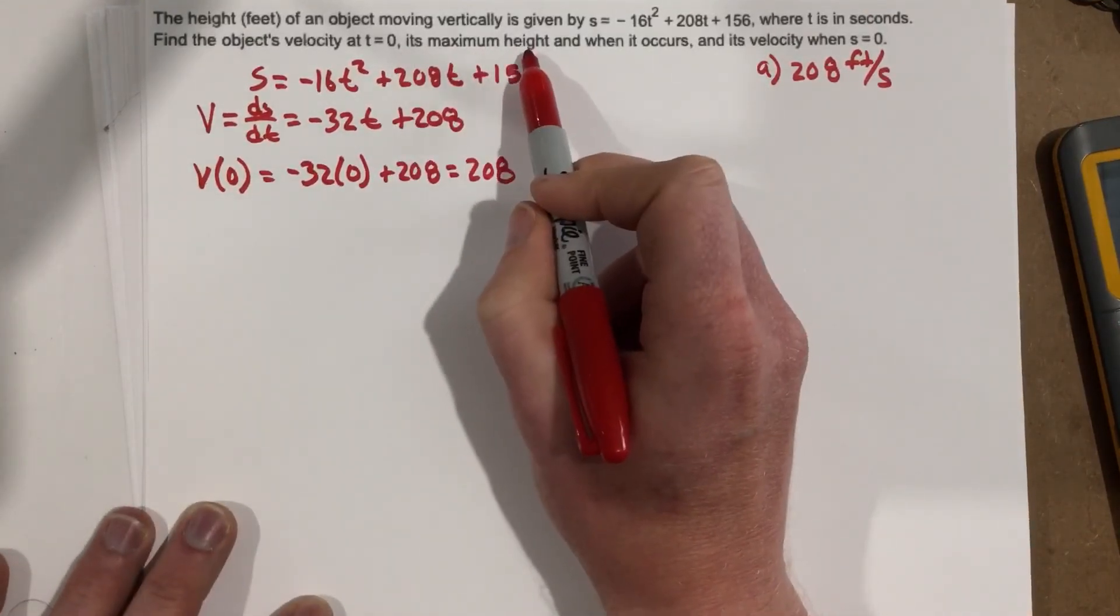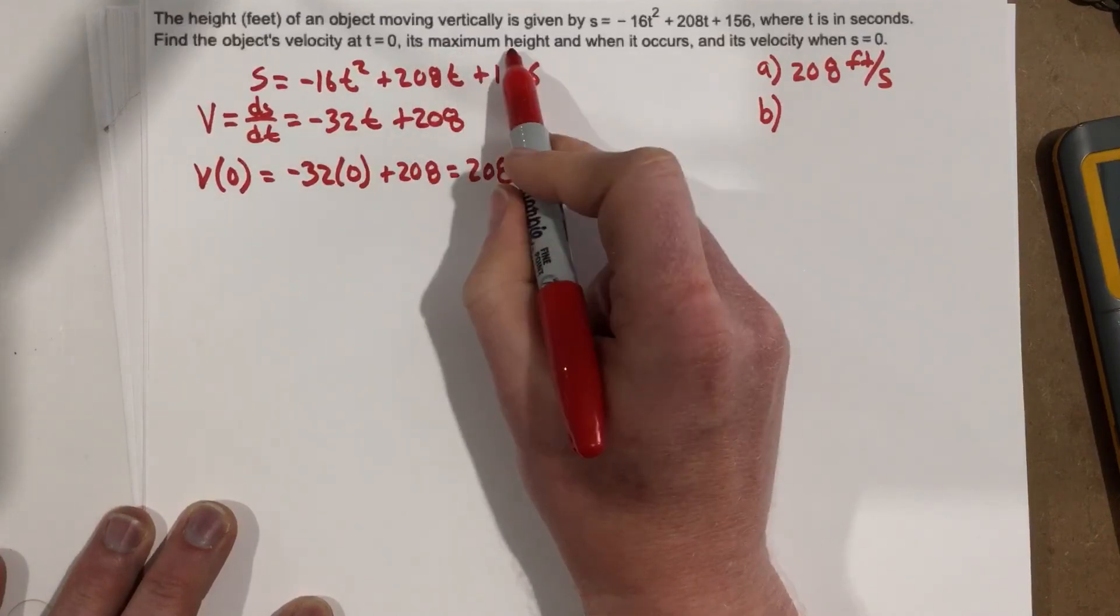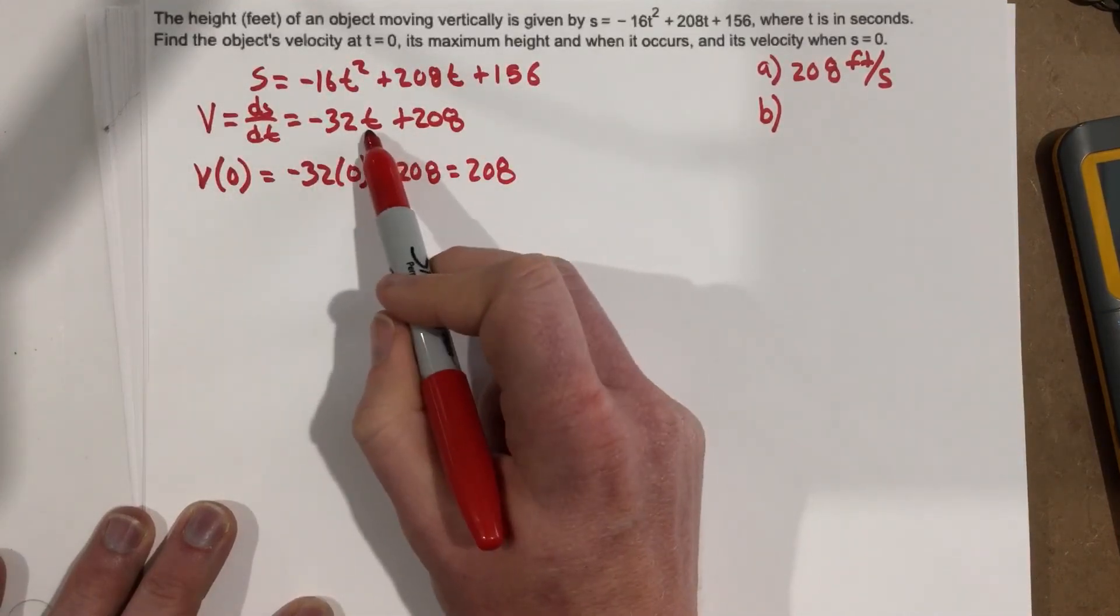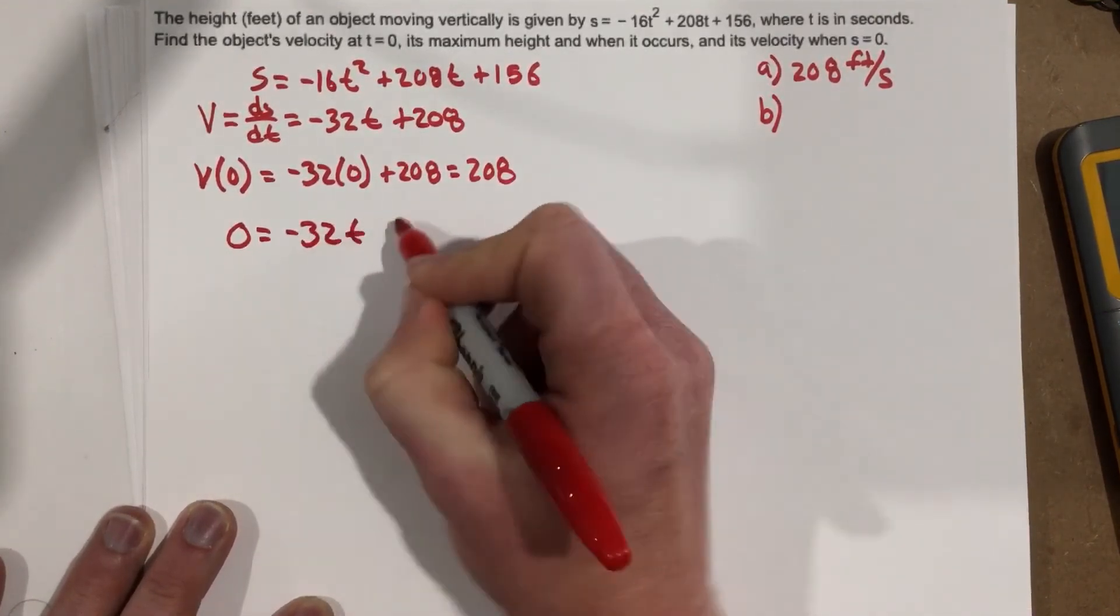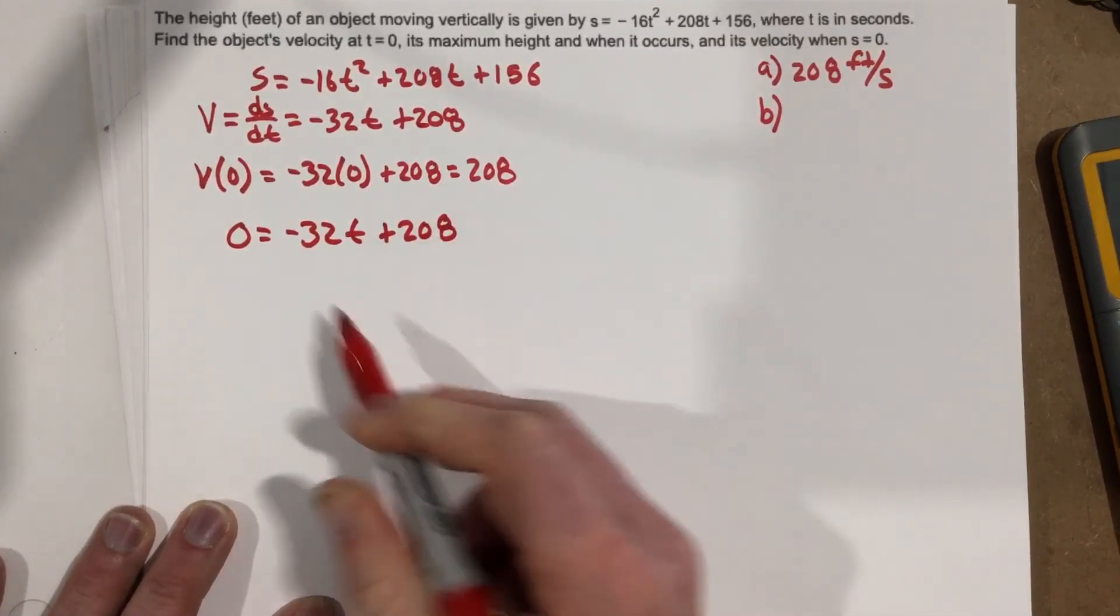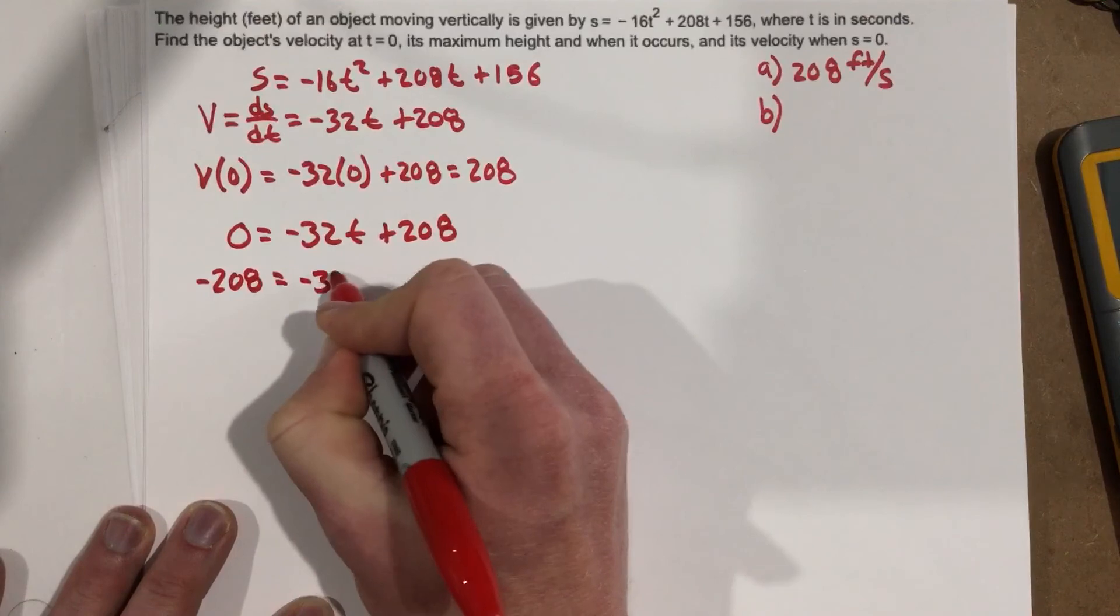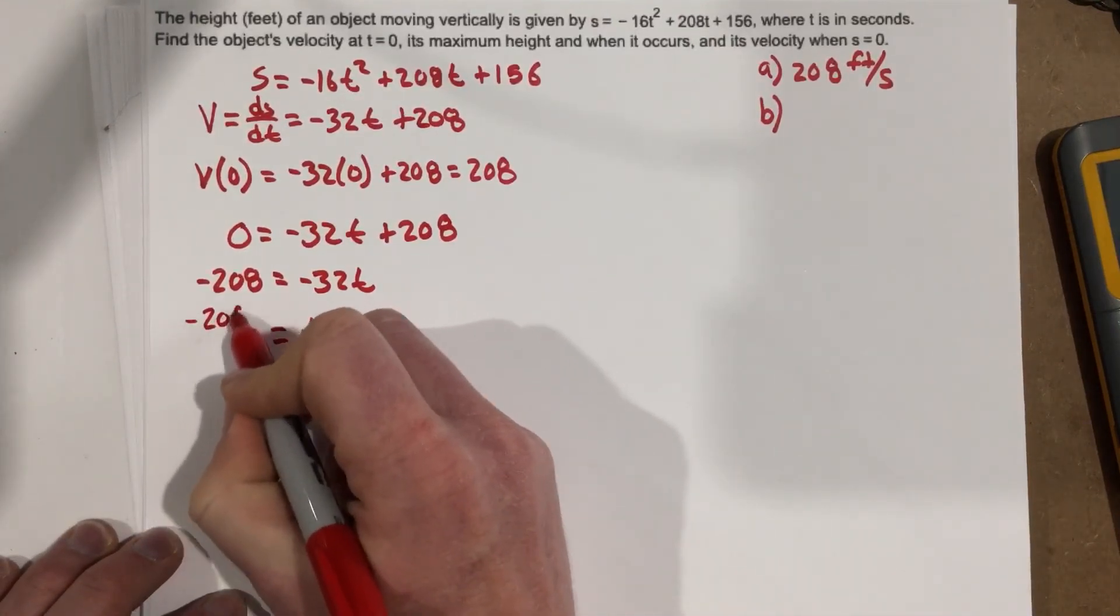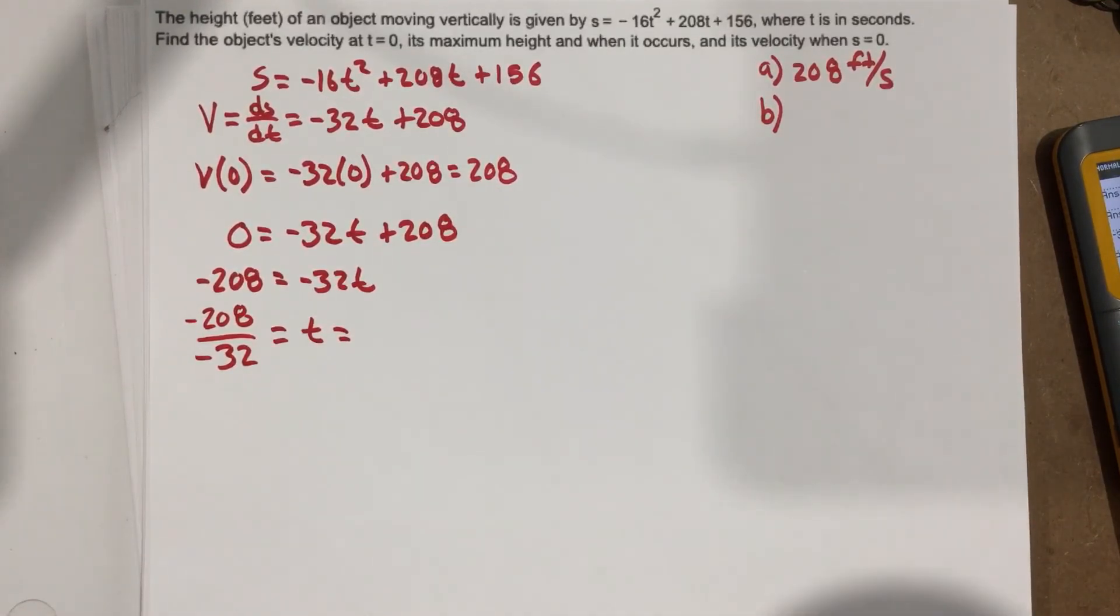They want us to find its maximum height. Okay, how do we find maximum height? So that's part B. Its maximum height would be found by taking the derivative of the original function, which we did. That's a velocity function, and then setting that equal to 0 to find the time. So let's set it equal to 0, and we'll find the time when it reaches its maximum height. So when I set this derivative to 0, I subtract the 208 over, divide by negative 32, and my time equals negative 208 over negative 32, which is 6.5 seconds.